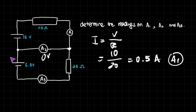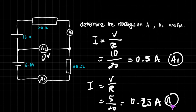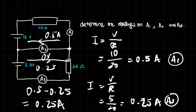Now let's look at A3. There are also zero volts across the ammeter in this loop, so all we care about is the resistance in this branch. I equals V over R, which gives us 5 over 20, equal to 0.25 amps — so that's A3. Now we know that A1 has 0.5 amps flowing this way, and A3 has 0.25 amps. The overall current flowing is 0.5 minus 0.25, which equals 0.25 amps, and that is the reading for A2.